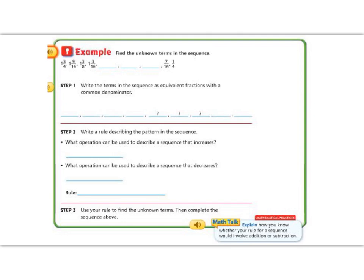It says find the unknown terms in the sequence. So let's look at our terms. We have 1 3/4, and then 1 9/16, and then 1 3/8, and then 1 3/16. Then we have some wholes, then we have 7/16, and then 1/4.